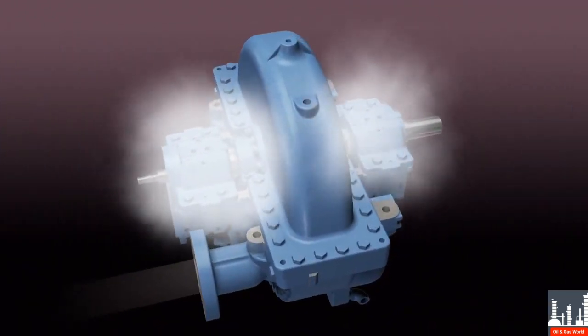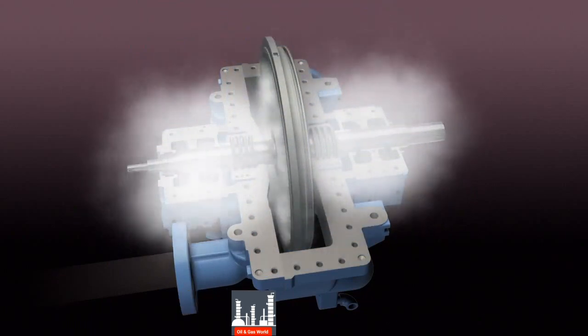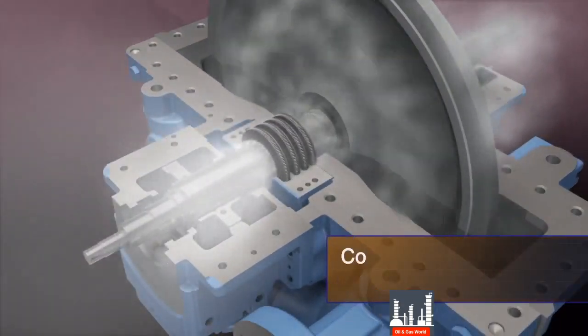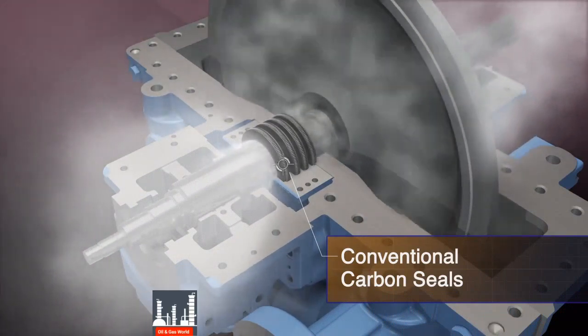Steam leakage in process steam turbines lowers efficiency and increases costs. Conventional carbon seals are weak, brittle, and wear quickly, causing them to become ineffective within a short period of time.